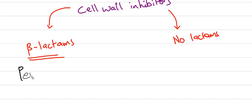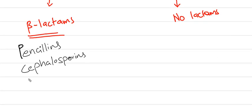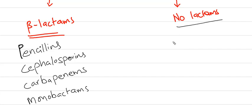In beta-lactams, we have Cephalosporins, Carbapenems like Meropenem, Ertapenem, and Monobactams like Aztreonam.